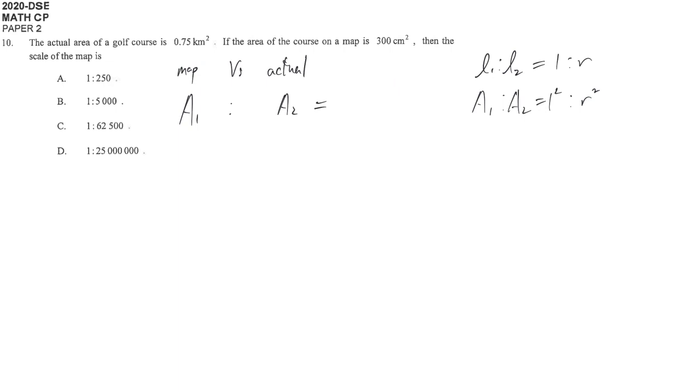The ratio map is 0.300 cm squared to 0.75 km squared. So from A1 to A2, if you want to get back the length ratio, that means the scale of the map, we are going to take square root to recover that.